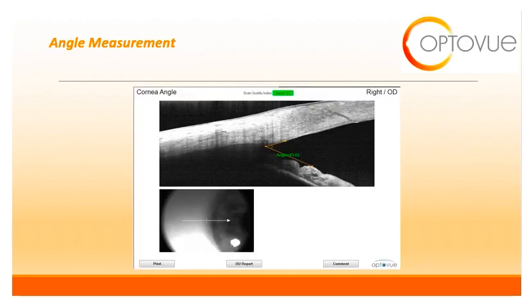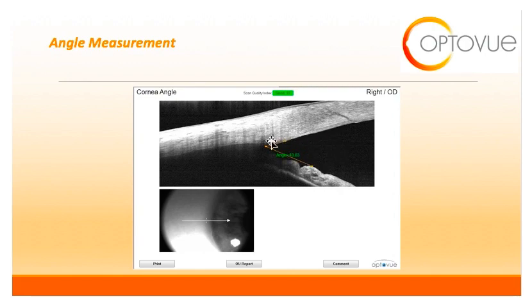This slide shows you what a normal anterior chamber angle should look like. You can use the calipers on the OCT to measure the angle — this angle is wide open. We put our calipers on the most posterior edge of the cornea and the most anterior part of the angle, which is your ciliary body band, and this would be the measurement of the corneal angle.